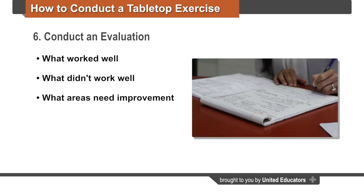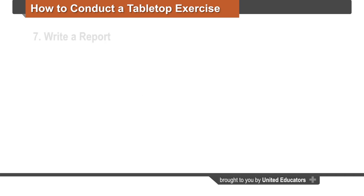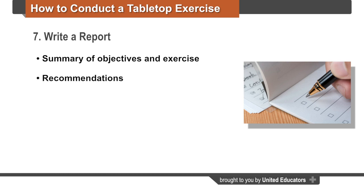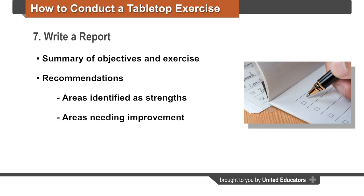Comprehensive notes should be taken during the evaluation. Regardless of the scope of the tabletop exercise, it's important to synthesize the information gained. This is generally done in the form of a report written by the crisis response team, to include a summary of the objectives and the exercise itself, and recommendations from the debrief and evaluation — including areas identified as strengths, areas needing improvement, and action steps to improve crisis response at your institution. Remember, this is the reason we conducted the tabletop exercise in the first place: to improve your plan and its implementation by the team.